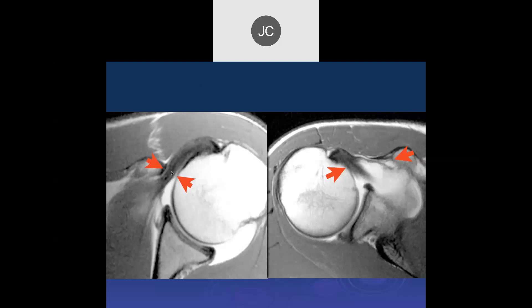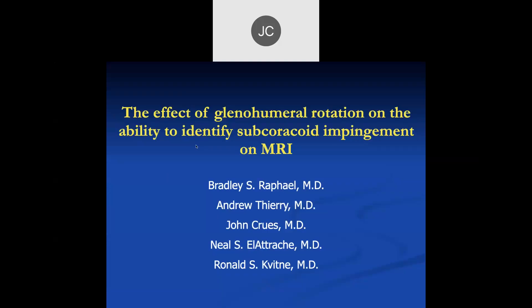The diagnosis is not made by MRI alone. One of the speaker's operated shoulders had a 3 mm separation here with no symptoms at that location. A study was done examining the effect of glenohumeral rotation on identifying subcoracoid impingement using MRI, looking at different degrees of internal and external rotation.